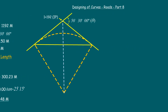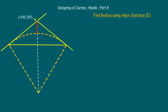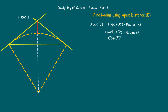Now let us find the radius using the apex distance and cross-check the value derived using the tangential method. As seen in our previous episode, the apex distance equals the hypotenuse minus the radius, that is: radius divided by cos(theta/2) minus the radius, which simplifies to radius into (1/cos(theta/2) minus 1).